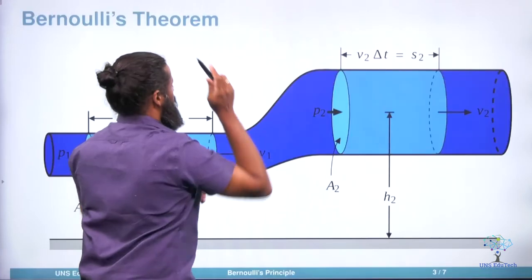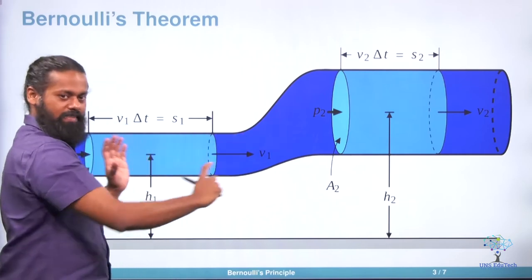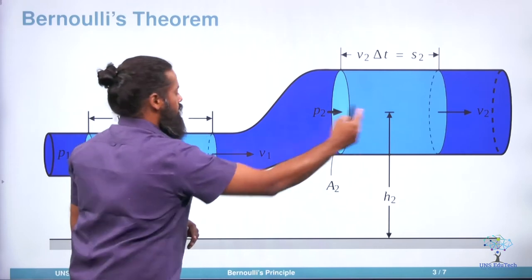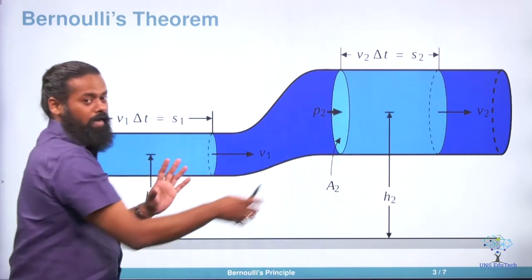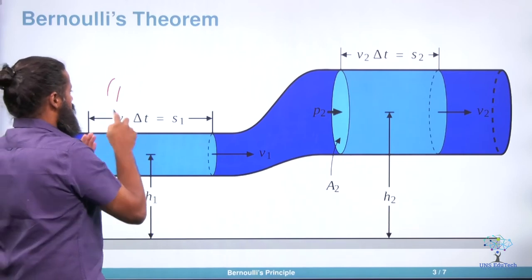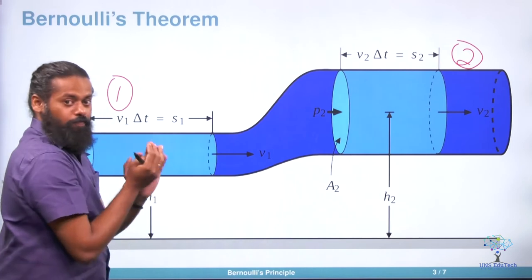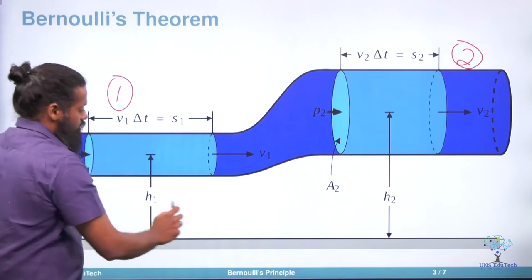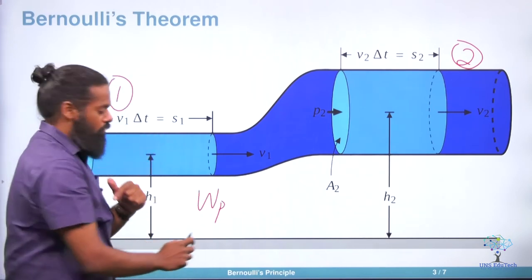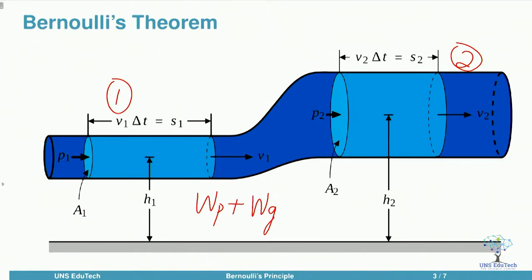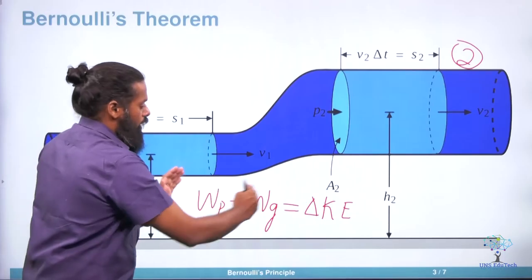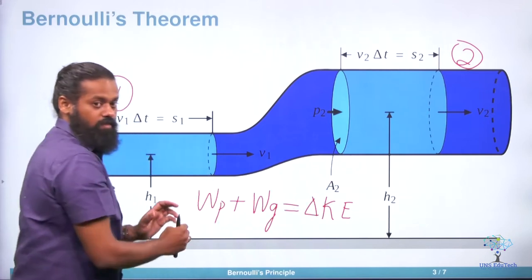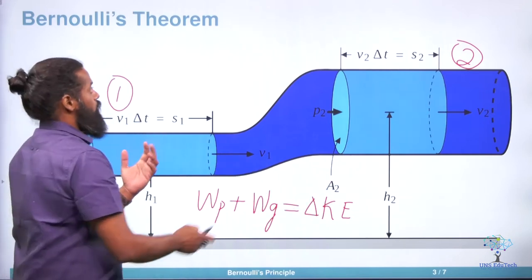To understand this, take a horizontal section of pipe with fluid flowing through it — two sections with some area difference, section one and two. In a moving fluid, moving from one location to another, work is done by pressure and by gravity, and those two will equal the change in kinetic energy. This is the work-energy principle applied to a moving fluid.